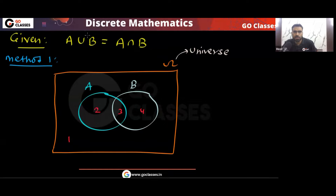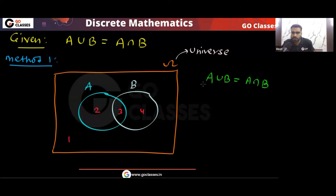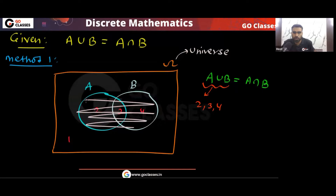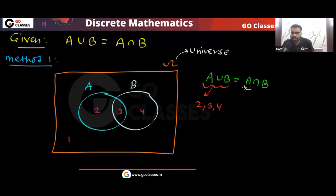If A union B equals A intersection B, is it possible there is some element in area number two? The area of A union B covers areas two, three, and four. The area of A intersection B is area three only — and they are equal. So if they are equal, is it possible there is some element in area number two?